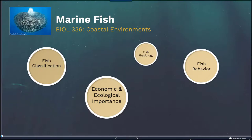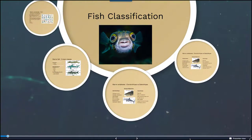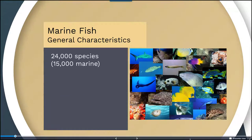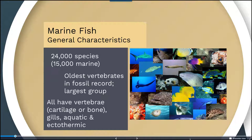Today we'll be talking about marine fish and we'll start with some fish classification. There are approximately 24,000 species of fish and 15,000 of those are found in the marine environment. They are the oldest vertebrates in the fossil record and also a very large group, so there's quite a bit of diversity there.